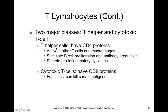When HIV infects T helper cells, it diminishes the immune system's ability to get the rest of the immune system excited, because there are fewer T helper cells to release pro-inflammatory cytokines — meaning cytotoxic T cells and B cells become less responsive to infection. This is the insidious nature of HIV infection.